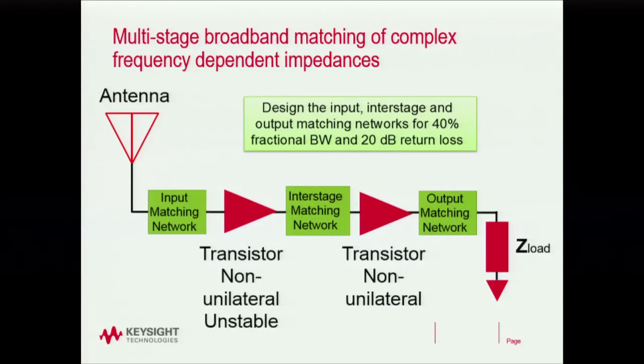Let's define the problem we want to tackle today. It's basically doing broadband impedance matching into complex frequency-dependent impedances. As an example, we have an antenna whose impedance varies over frequency and is complex. We then need to feed that antenna into a transistor that is unstable and also non-unilateral. Non-unilateral means that whatever you do to match the output is going to impact what you have on the input, so the input and output have to be designed simultaneously.